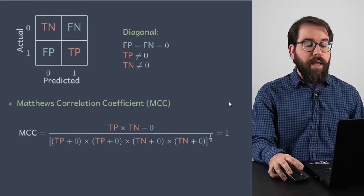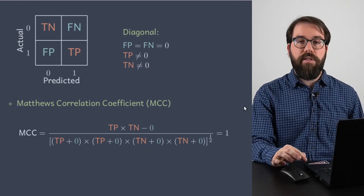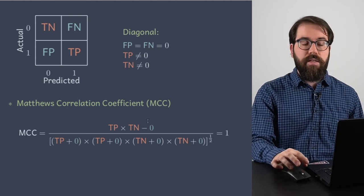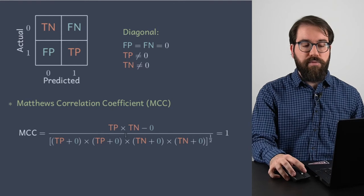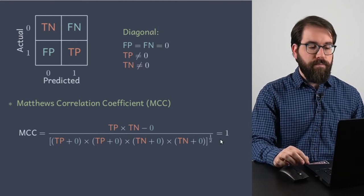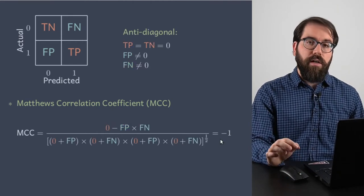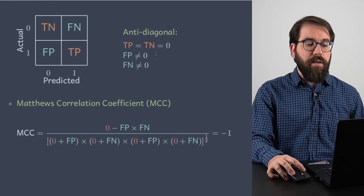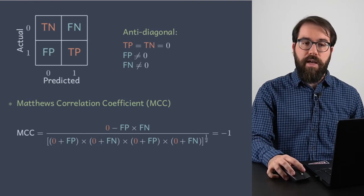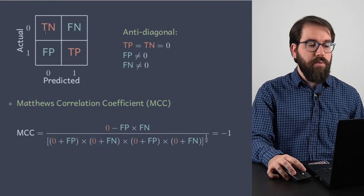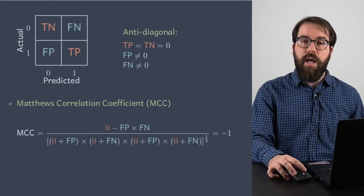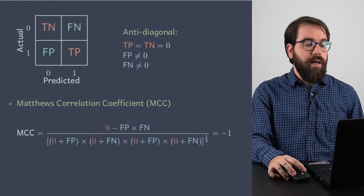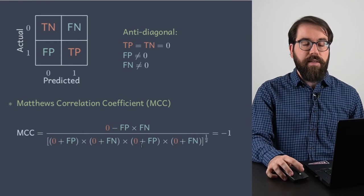Next, when the diagonal terms are positive and different from 0, and the off-diagonal terms equal 0, if you simplify the formula you get exactly 1. Then the anti-diagonal confusion matrix: when the diagonal of the confusion matrix equals 0 and the off-diagonal terms are non-zero, the numerator is clearly negative, and if you simplify the formula you get exactly minus 1.